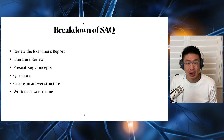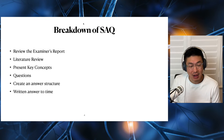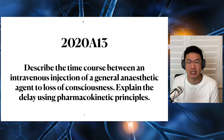With the breakdown of the SAQs, as always we're going to review the exam's report, look at the literature, present some key concepts, answer any questions, and show you an answer structure before we all have a go at writing an answer to time. This is the 2020 question 13: describe the time course between an intravenous injection of a general anesthetic agent to loss of consciousness, and explain the delay using pharmacokinetic principles.